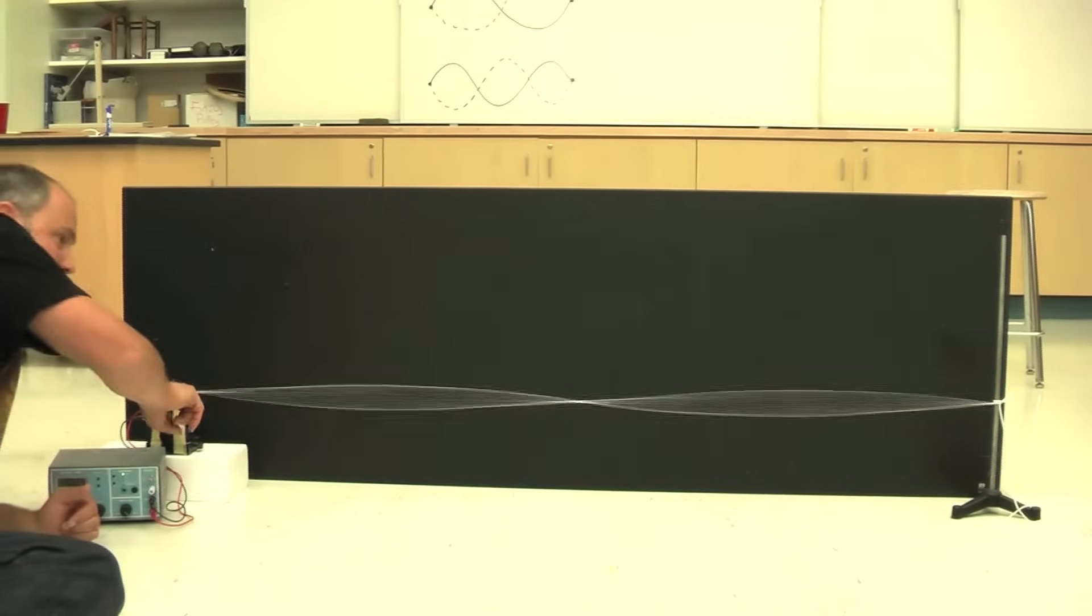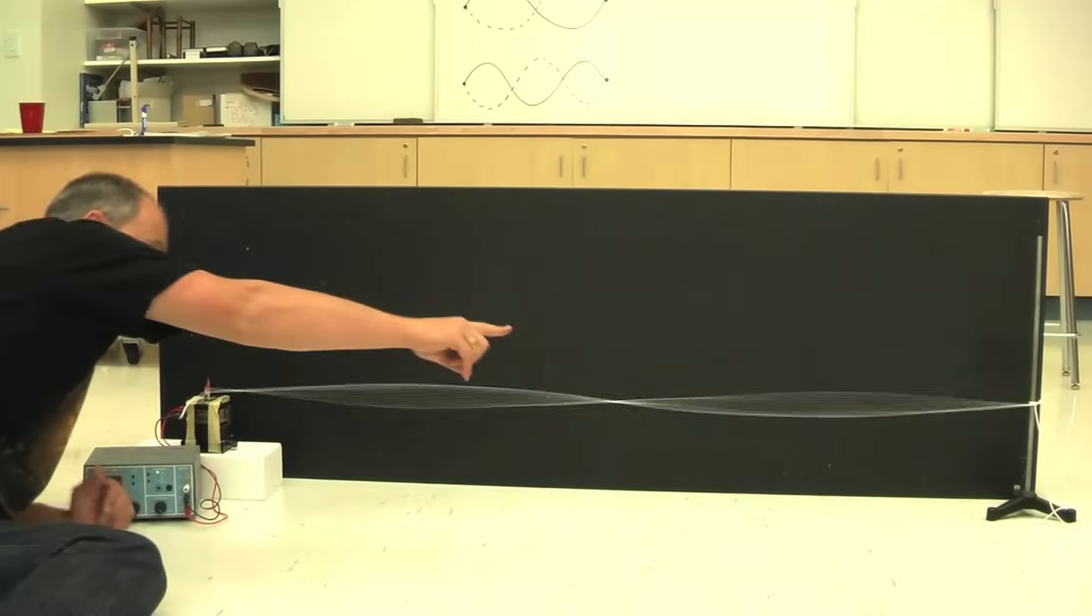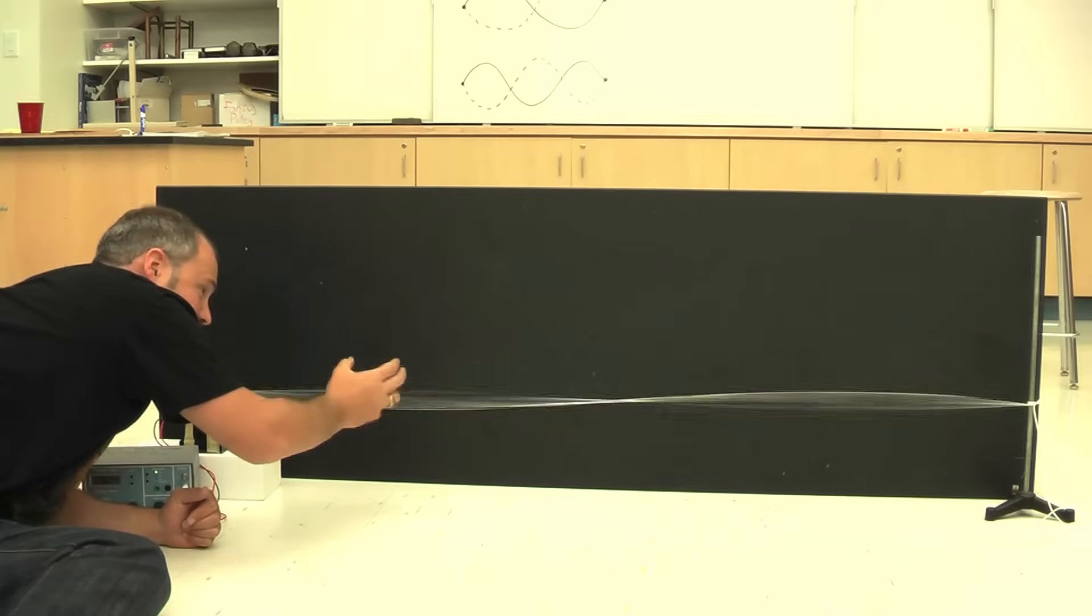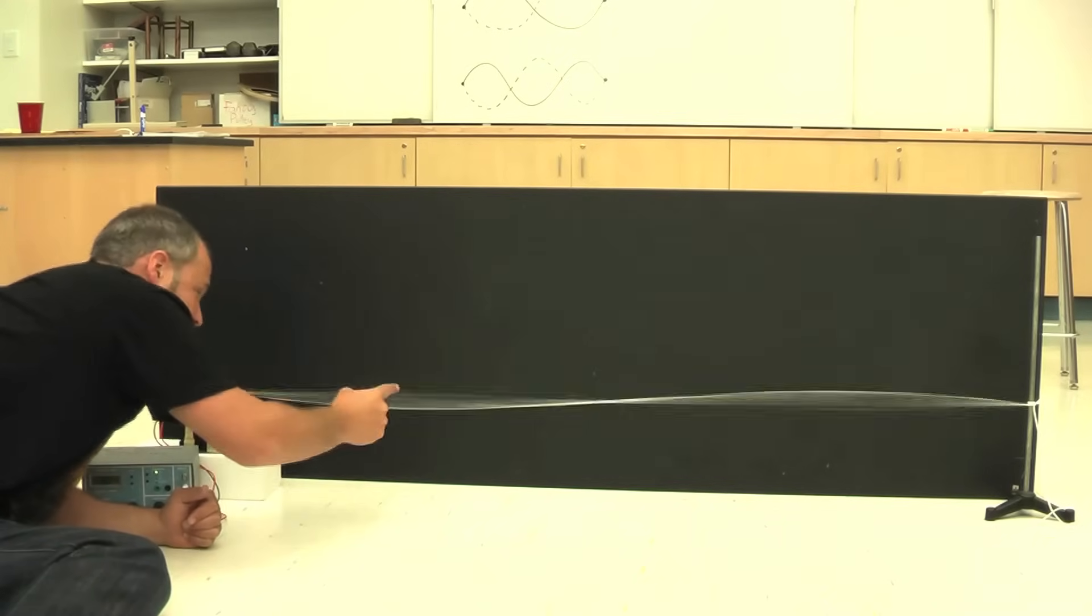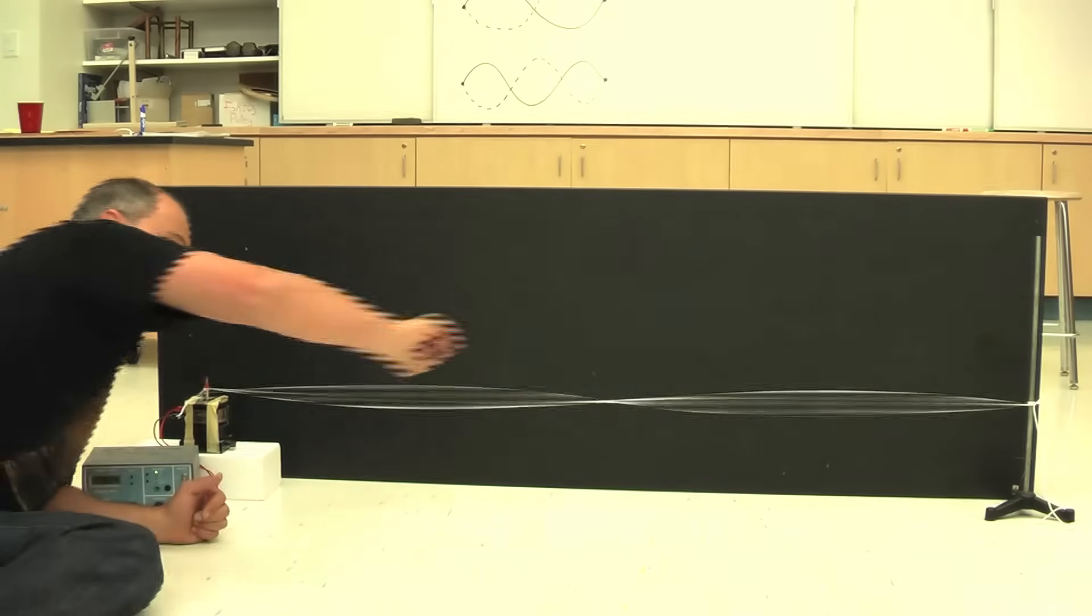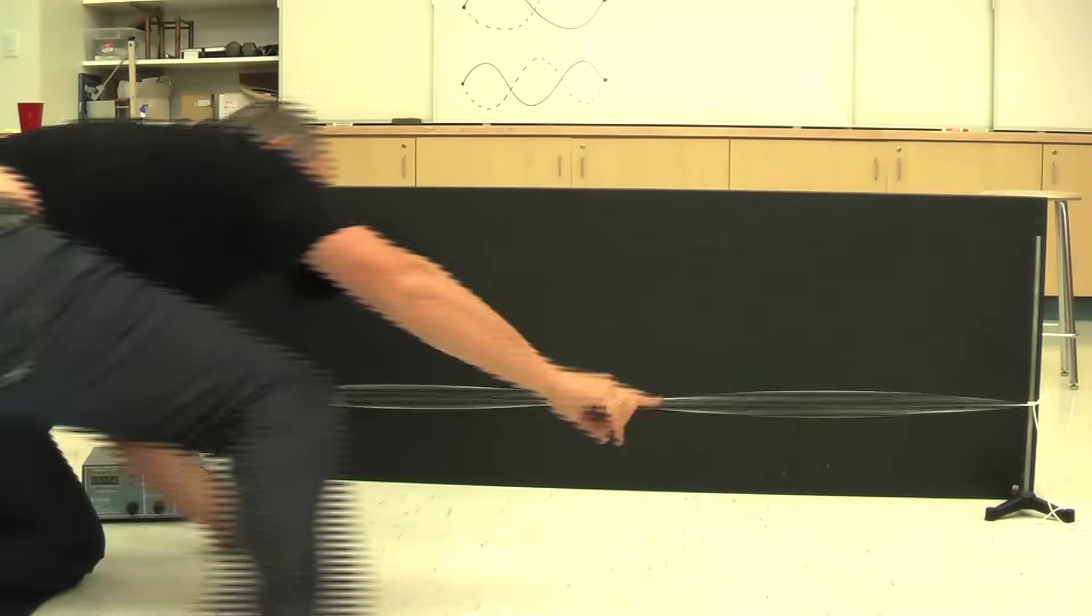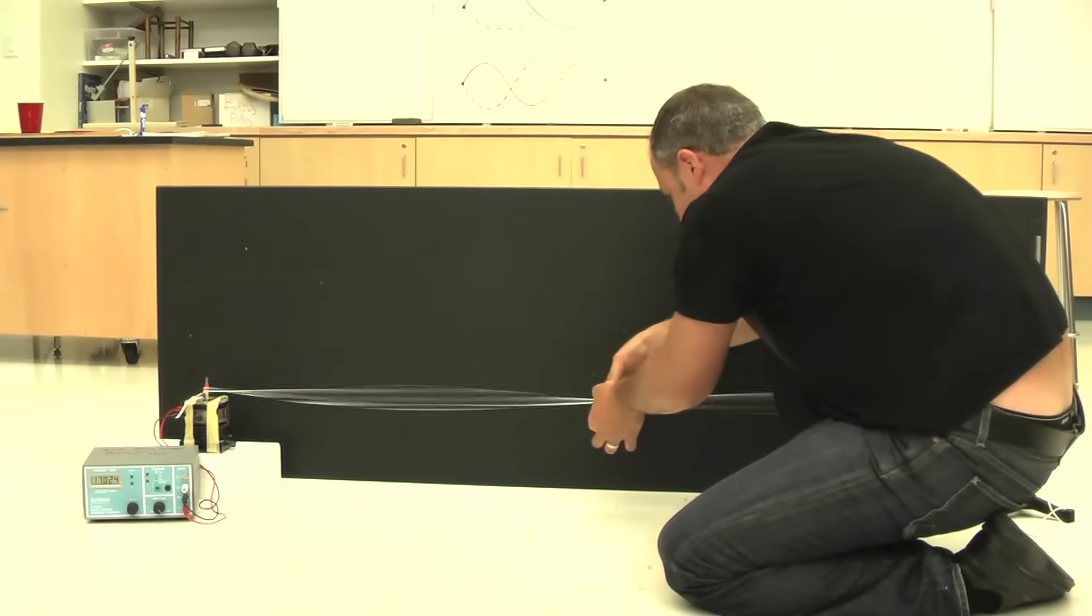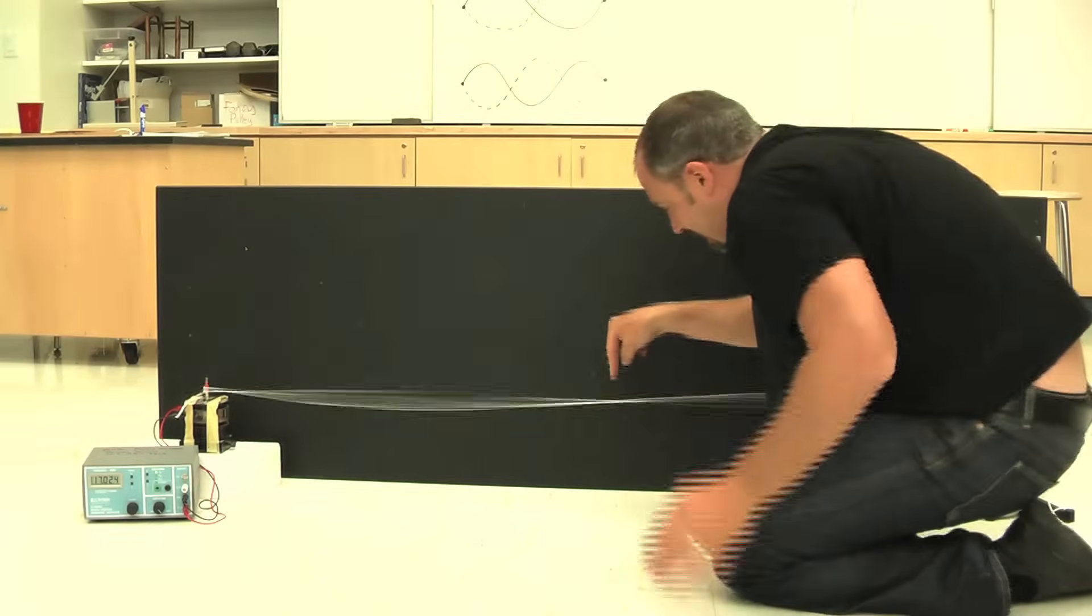That is, the wave that's sent down and reflects constructively interferes with the next wave that comes down right at this point. The waves that reflect, that come down and reflect, destructively interfere with the incoming waves right here. And that's called a node.